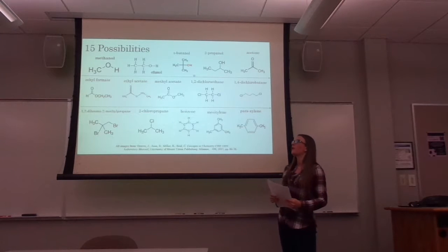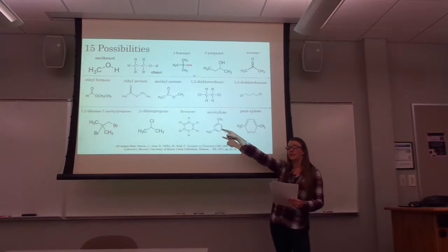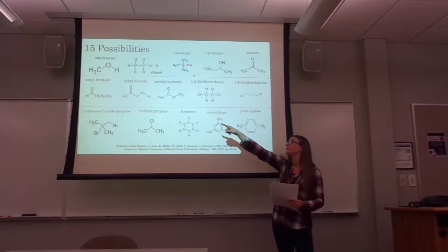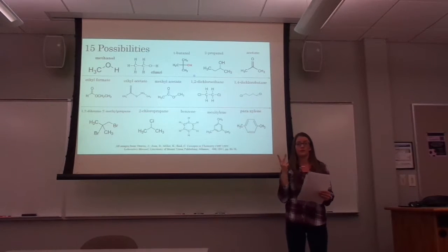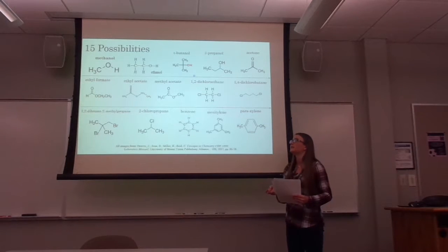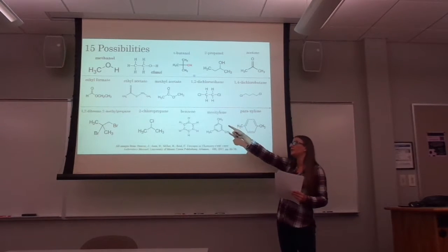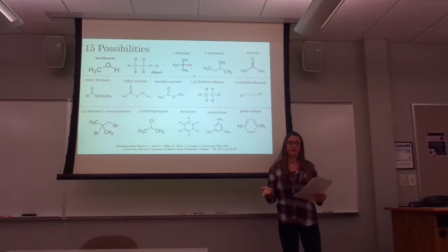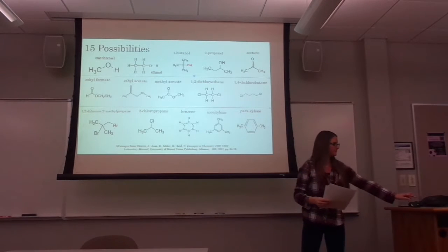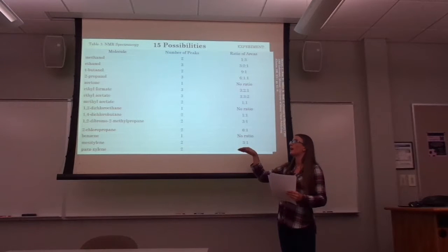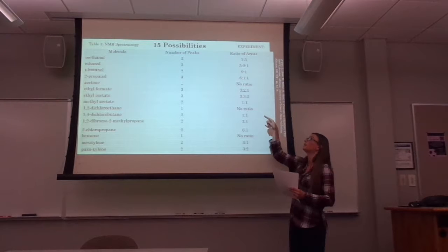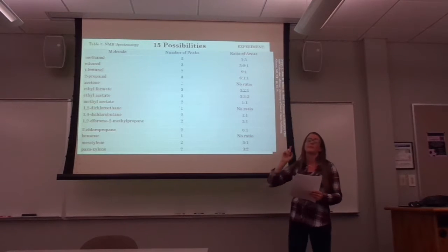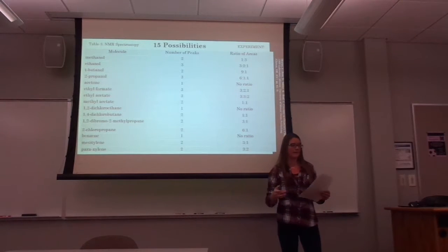Looking at methanol again, it has one hydrogen in the OH functional group and another set of hydrogens in the CH functional group — two different types of hydrogens, meaning two different NMR peaks. The peak ratio would be one hydrogen versus three hydrogens, so a 1 to 3 peak ratio. In the NMR chart, methanol has two peaks with a peak ratio of 1 to 3.